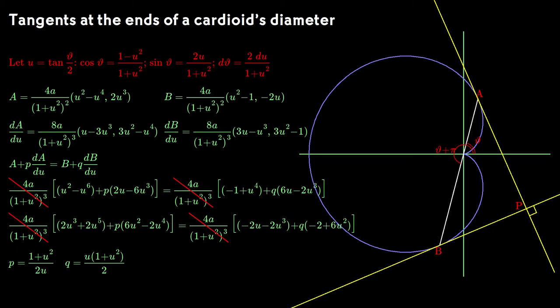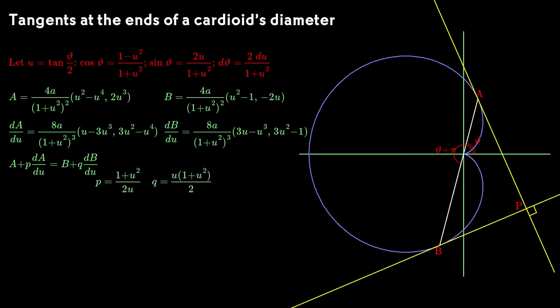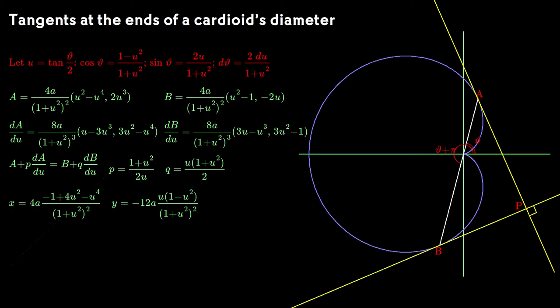Not a bad result, particularly since it gives us that p is 1 over sin theta. Let me tidy up the intermediate work once again. If we plug the formula for p and q back into one of the equations for the tangent lines and simplify, we get some nice rational functions again.